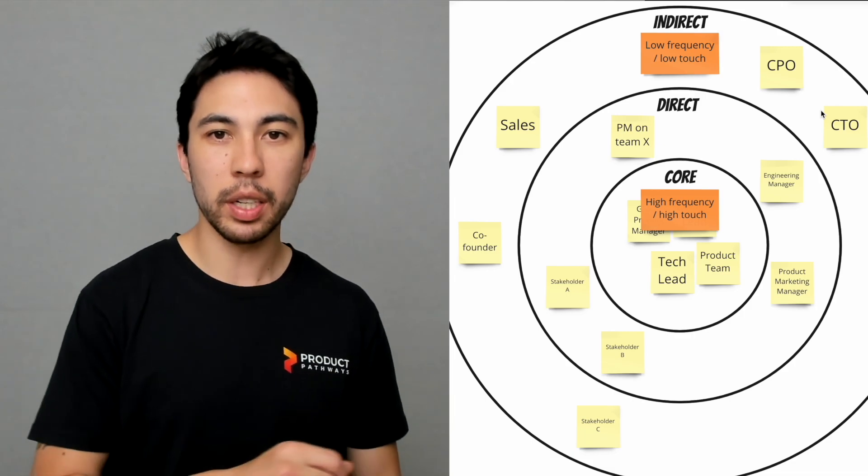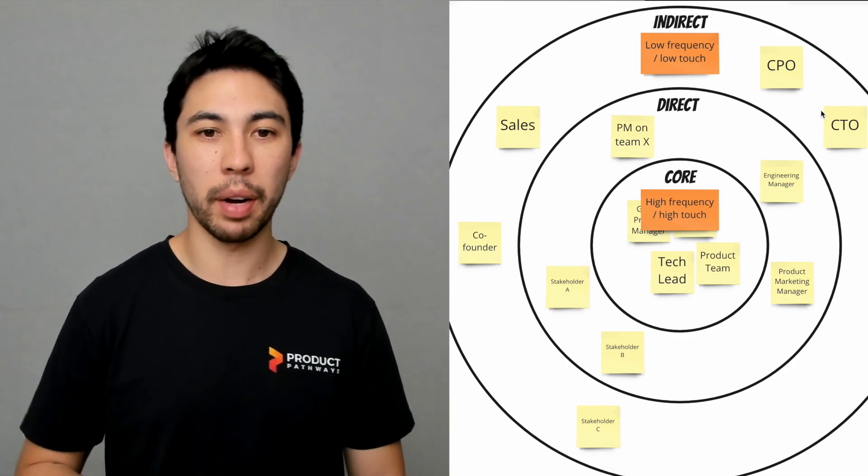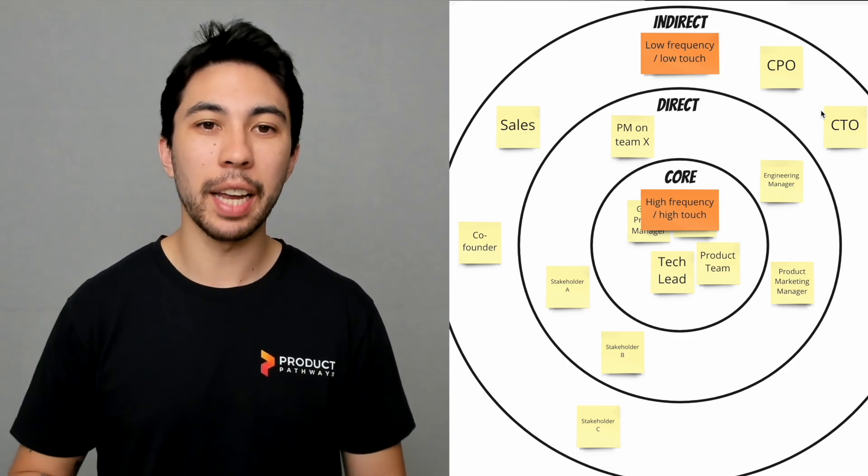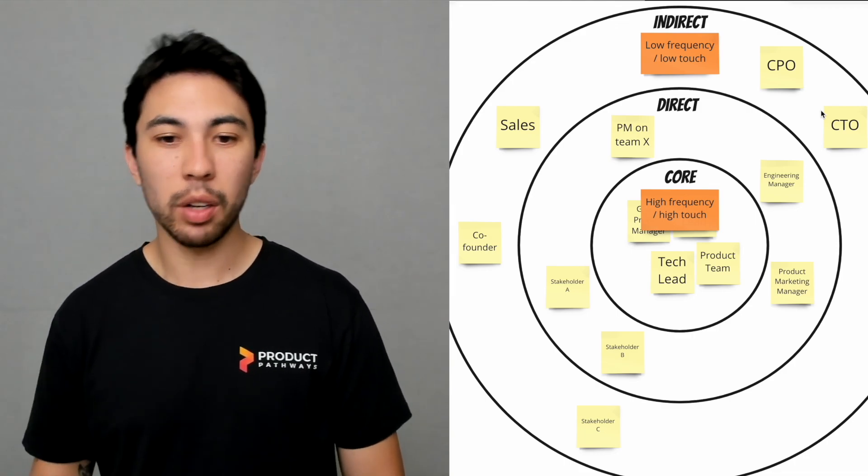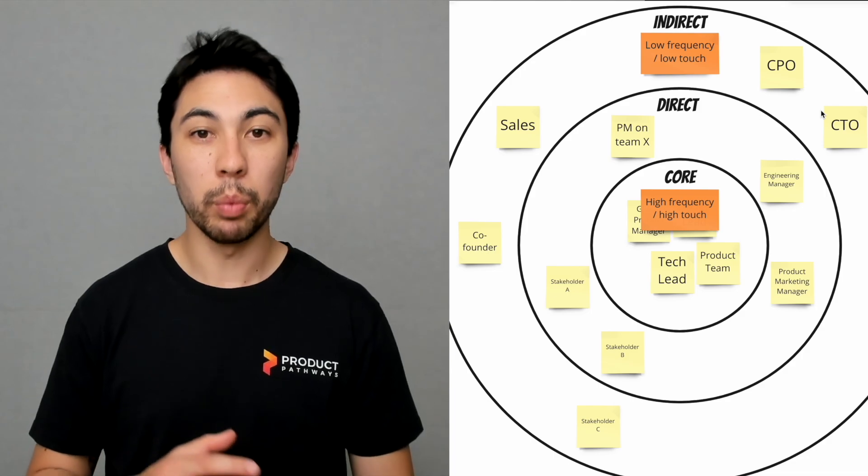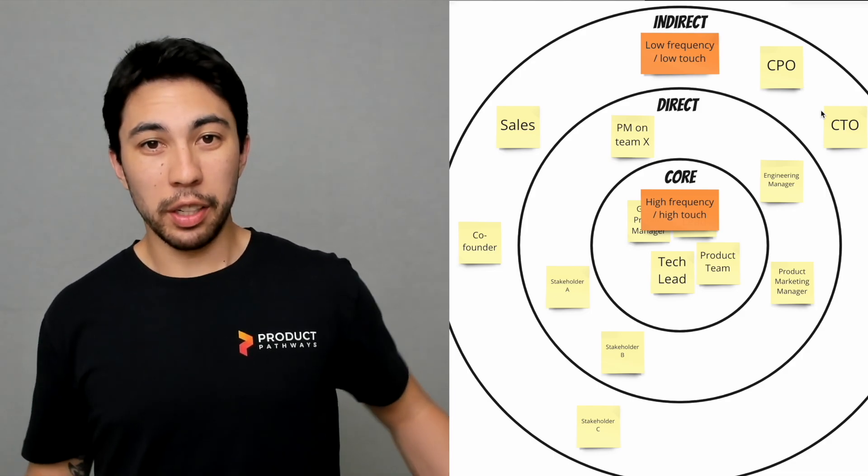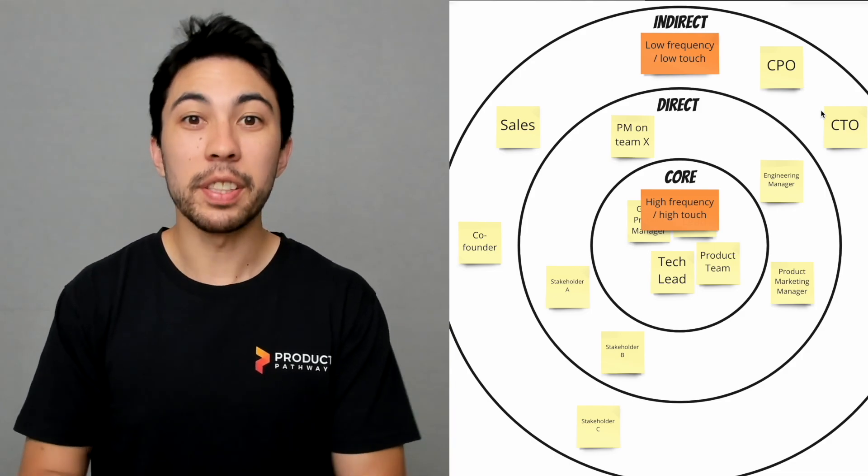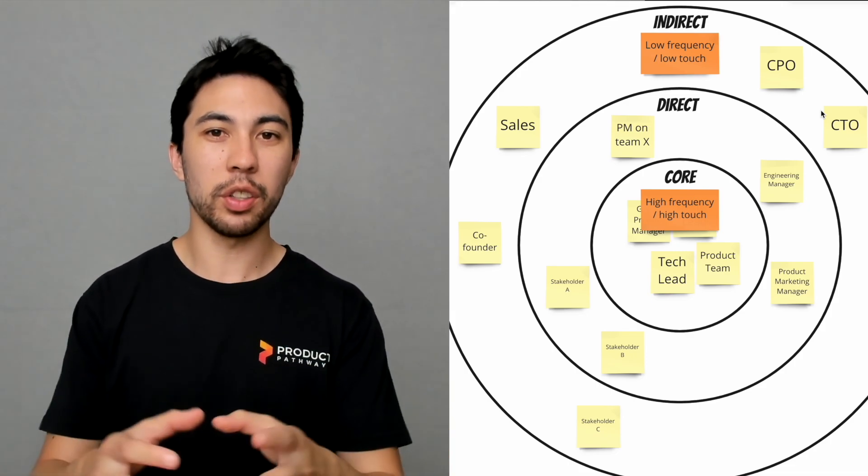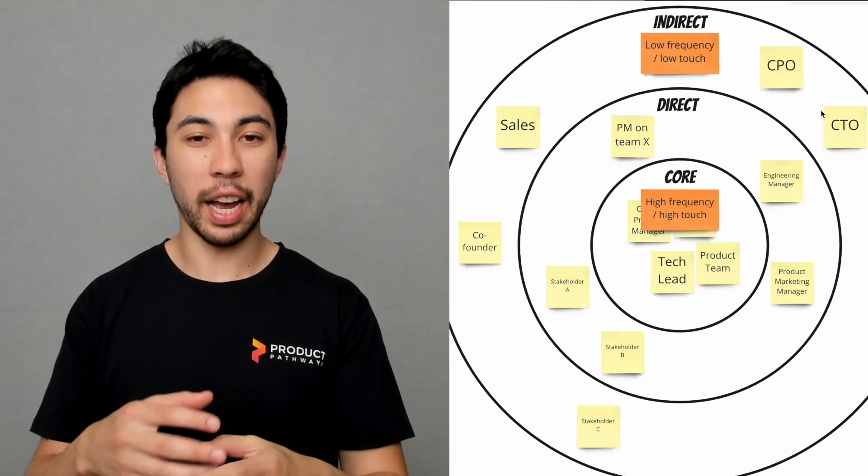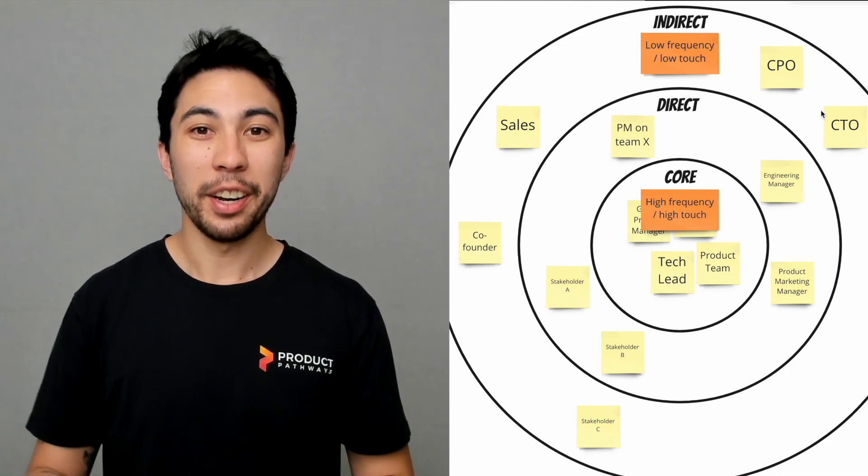We might lower the frequency, we might change the touch. So we might do something like we'll keep them up to date in a monthly demo or we might do something like an email. There's many options there, but we can adjust. The inverse is also true: if you see a stakeholder that sits more in the core side of the fence or even in the direct, and you have them down for a very low frequency or maybe a very low touch, you might want to revisit that.